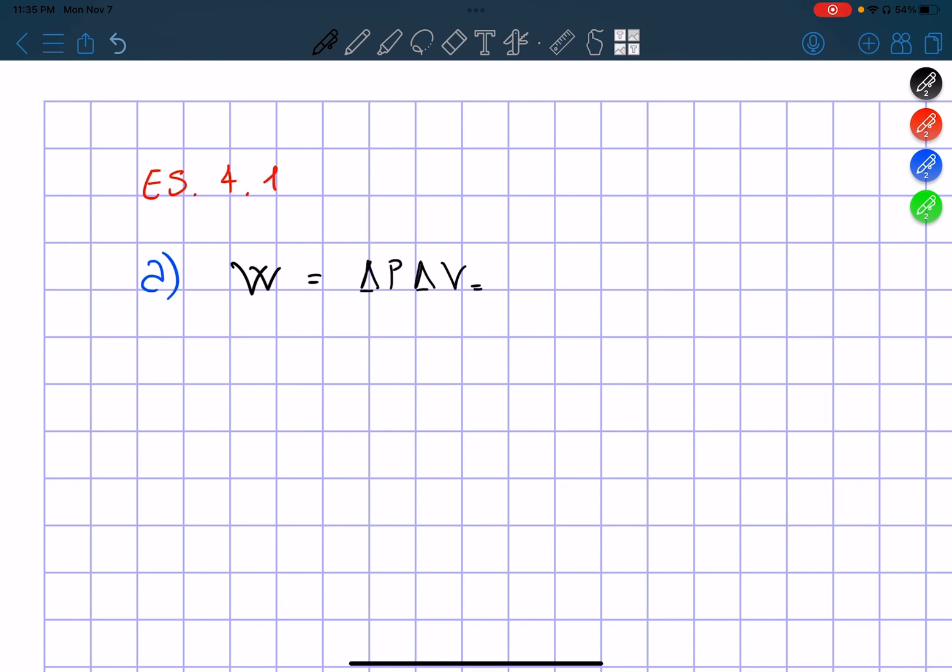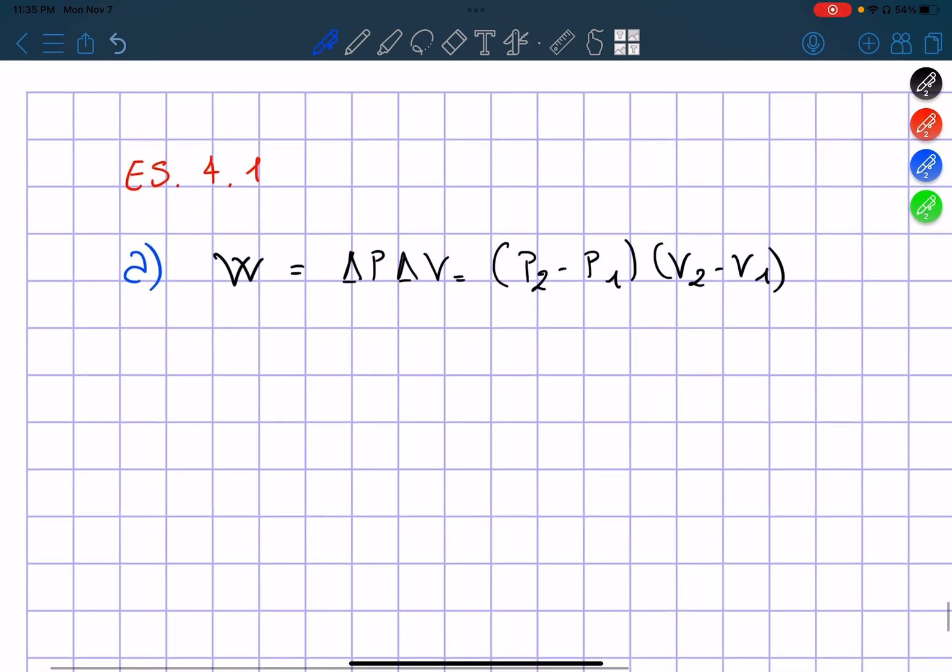Which means it equals P2 minus P1 times V2 minus V1. And we know that V2 is equal to 3V1 and P2 is equal to 2P1.